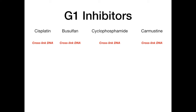The only caveats: cyclophosphamide cross-links DNA specifically at guanine and requires hepatic bioactivation. Carmustine crosses the blood-brain barrier and requires bioactivation in the brain, making it useful for CNS tumors. Busulfan and cisplatin — all you need to memorize is that they cross-link DNA. The most high-yield aspect of these G1 agents are actually their side effects.